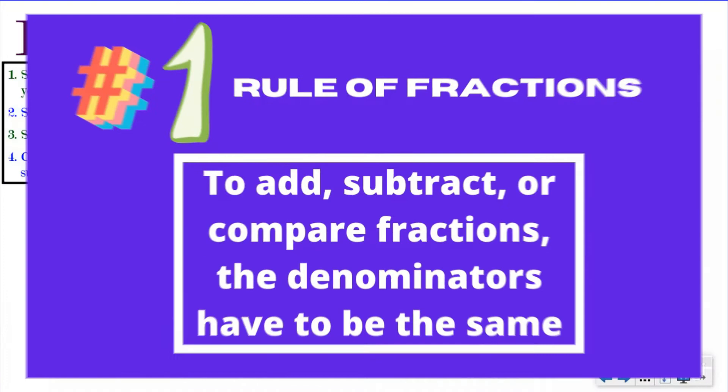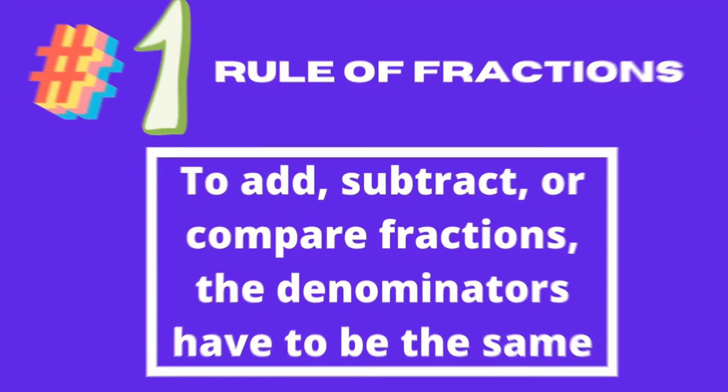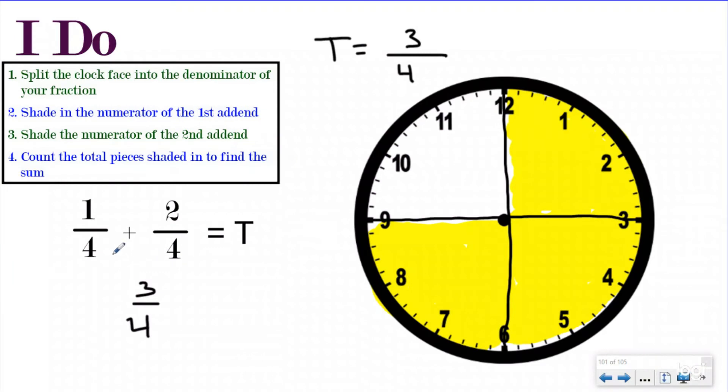The number one rule of fractions is to add, subtract, or compare fractions, the denominators have to be the same. You notice that the denominators are both four, which means I could split my clock face into four equal groups and add my numerators. If they were not, I could not have added them in this way. I'd have to use some unusual thinking and draw it completely differently.